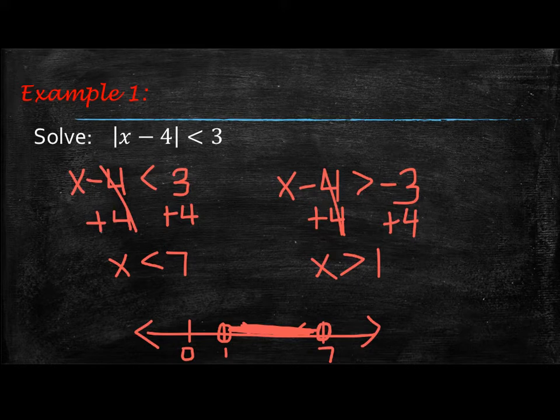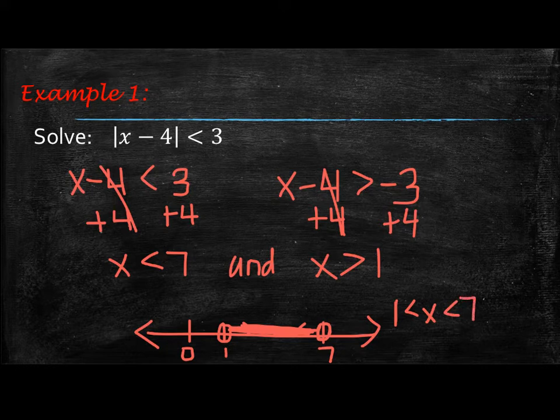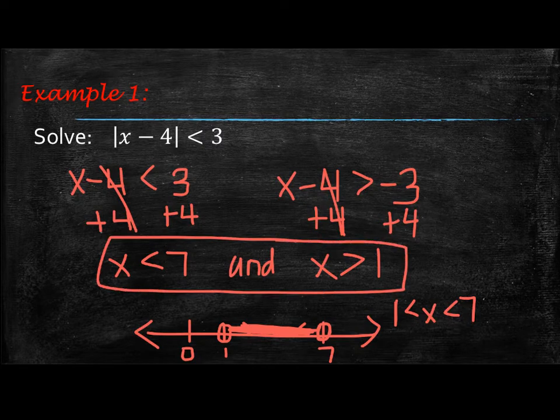x is all the numbers that are between 1 and 7. You can either put an AND here, or you could rewrite this as a between statement, which you should be familiar with from working with domain and range. We always put the lowest number first, then x in between, then the highest number at the end.